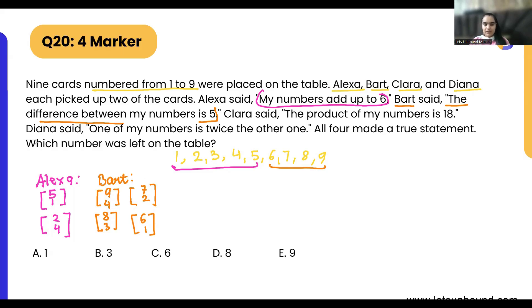Clara said the product of my numbers is 18. So 18, that means it should be a multiple of 18. Two times nine is 18, three times six is 18. Is there any number which we are missing? No.